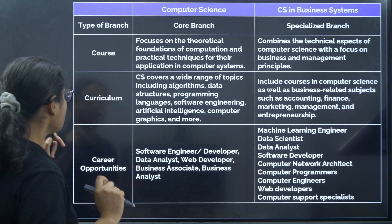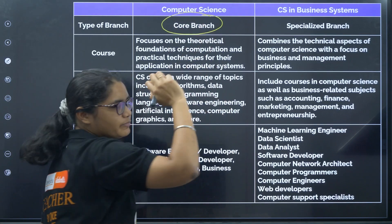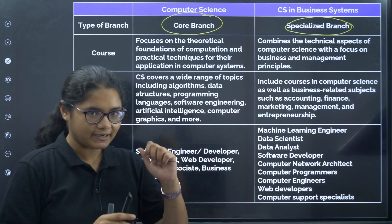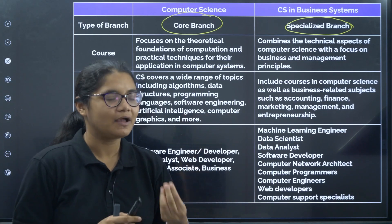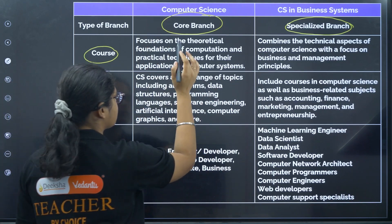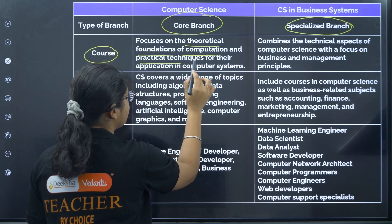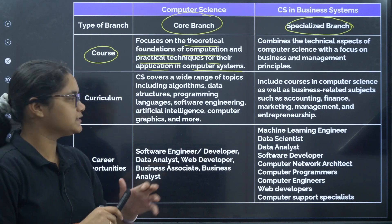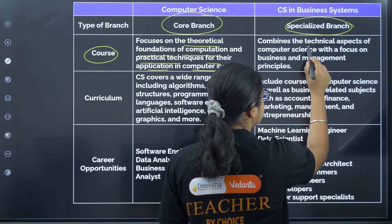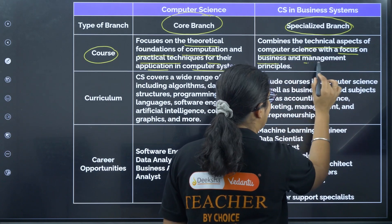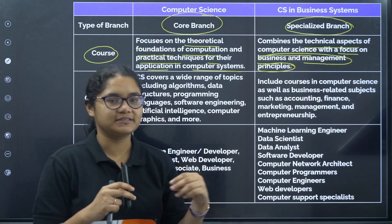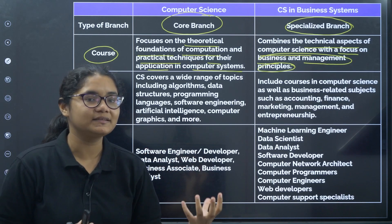Computer science is the core branch — it has been there for years. Computer science and business system is a specialized branch where they teach you computer science but with an additional specialization in business systems. In business system, you study a combination of the technical aspects of computer science along with business and management principles — that is the key difference.